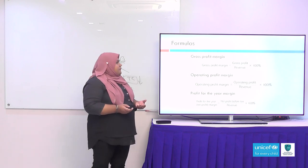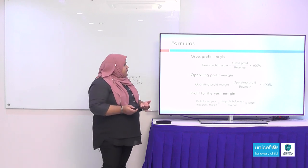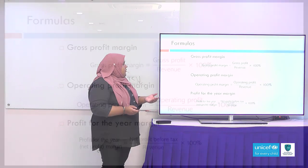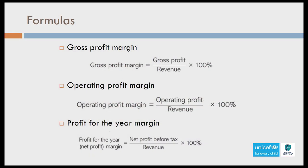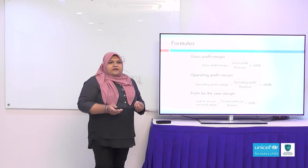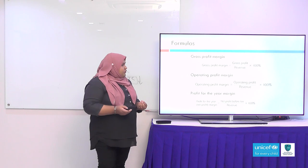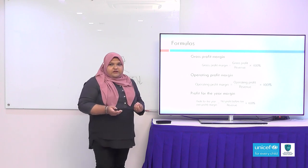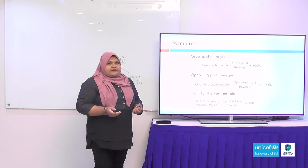Let's look at the formulas. Gross profit margin equals gross profit over revenue, multiplied by 100%. Operating profit margin equals operating profit over revenue, multiplied by 100%. Profit for the year margin equals net profit before tax over revenue, multiplied by 100%. One important thing to remember: in all of these profitability formulas, the denominator is always revenue. It is very important to memorize these formulas because they are not provided in the exam.